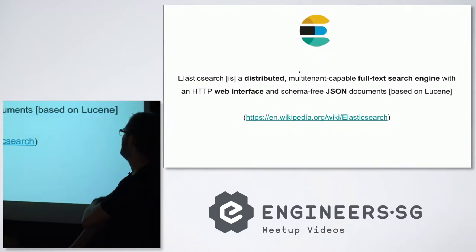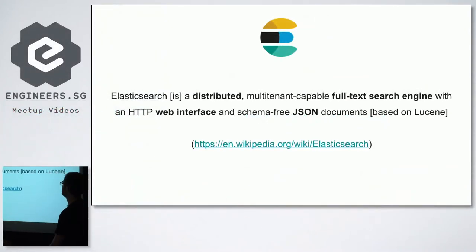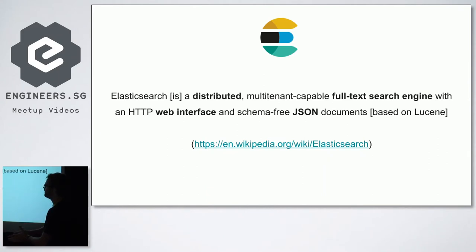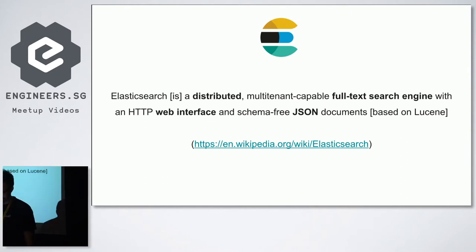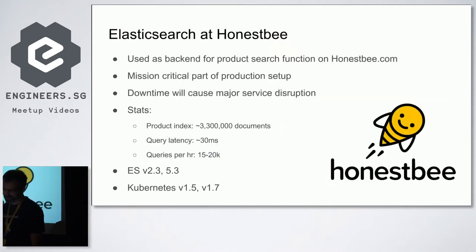I'm just going to give a quick quote from Wikipedia: Elasticsearch is a distributed full-text search engine with an HTTP web interface and schema-free JSON documents. It's based on Lucene, which means it's based on Java — important on the infrastructure side. It's got JSON documents and a REST API. Those are the most important things we need to know about it.